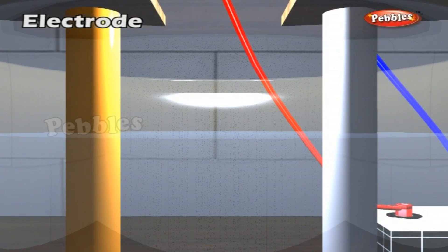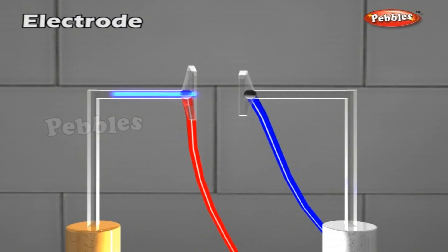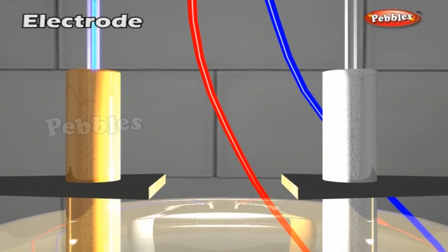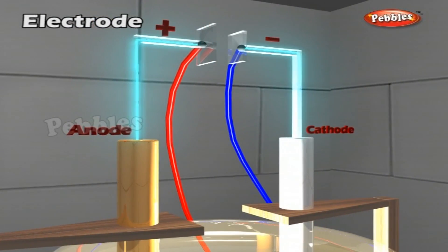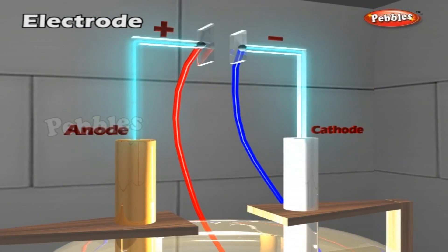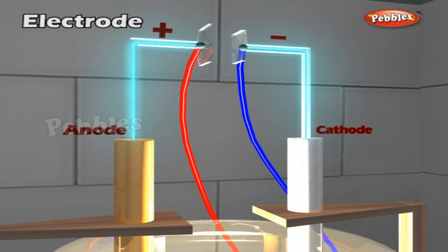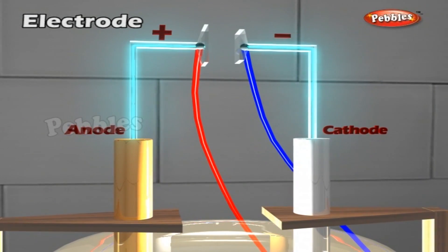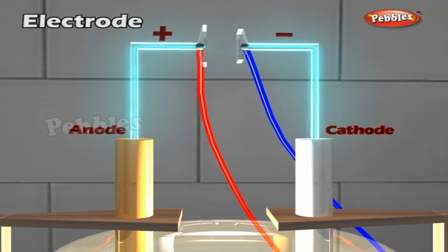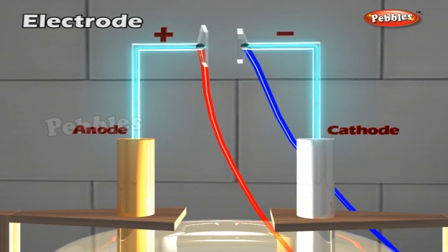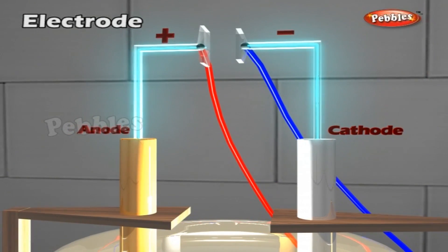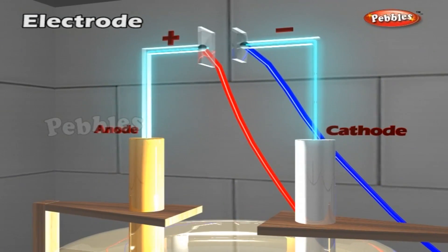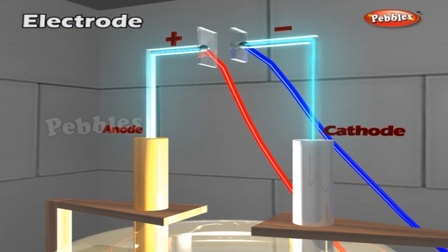The two metallic rods or plates which are dipped in the solution of an electrolyte to pass the electricity are called electrodes. The electrode which is connected to the positive end of the battery is said to be anode — it is positively charged and marked as plus. The electrode which is connected to the negative end of the battery is said to be cathode — it is negatively charged and marked as minus.